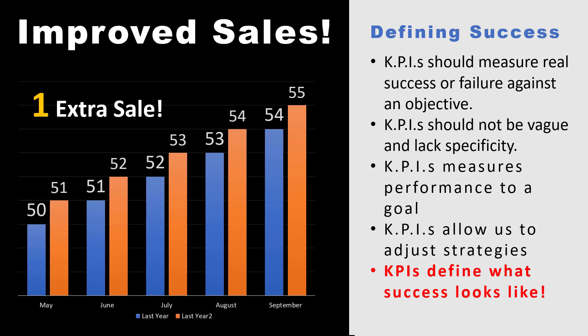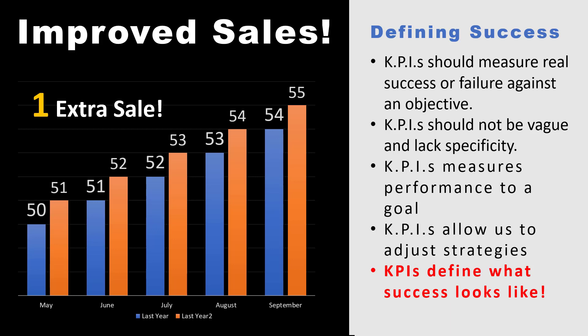KPIs should measure real success or failure against an objective. KPIs should not be vague and lack specificity. KPIs measure performance to a goal, and we don't know what the goal is. KPIs allow us to adjust our strategies based on whether we're succeeding or failing, and KPIs define what success looks like. We don't know if we should have 50% more sales, 20% more sales, or 10% more sales — per month, per year, or per day.